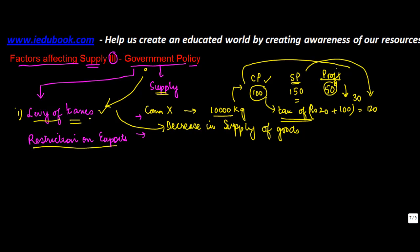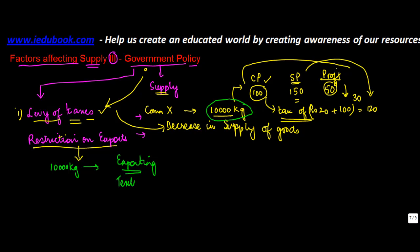Let's take the other example, which is restriction on exports. Many a times, because of certain reasons, the government may change the policy on exports. There are many industries in India which do a significant amount of exports — some being, for example, textile and even food. Quite a few items are exported.